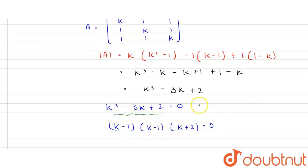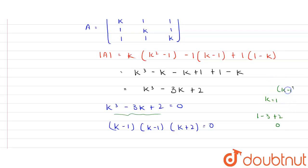The equation is k³ - 3k + 2. Putting k = 1: 1 - 3 + 2 = 0, so k - 1 is one factor. We now divide k³ - 3k + 2 by (k - 1) to find the remaining factors.